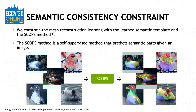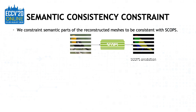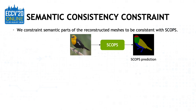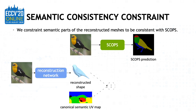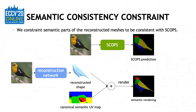We first obtain semantic part segmentation on 2D images using the SCOPS method, which is a self-supervised method that takes an image as input and outputs a semantic part segmentation. For the bird category, the model predicts four semantic parts for each bird, and these parts are consistent across different instances in the dataset. To use these semantic part segmentations, we propose a semantic consistency constraint. For each image, we first use the SCOPS method to obtain a semantic part prediction. We then warp the canonical semantic UV map onto the predicted shape and render it using the predicted camera pose. Since the canonical semantic UV map is shared between all instances, if both the shape and camera pose are correctly reconstructed, the rendered semantic prediction should be consistent with the SCOPS prediction.